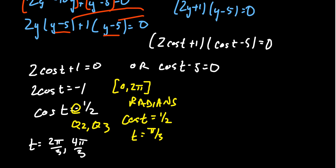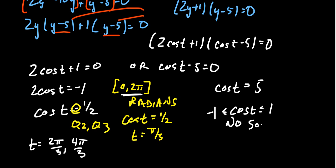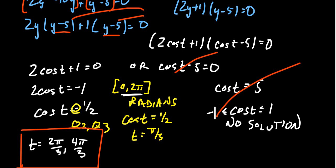This gives us two solutions in the domain [0, 2π]. For the other factor, cos(t) = 5 — but 5 is outside the range of cosine, which must be between −1 and 1. So there's no solution from that factor. That doesn't mean the equation has no solution; it just means that option isn't valid. The two solutions are t = 2π/3 and t = 4π/3. If we wanted the general solution set, we'd add 2πk, but the instructions only asked for [0, 2π].